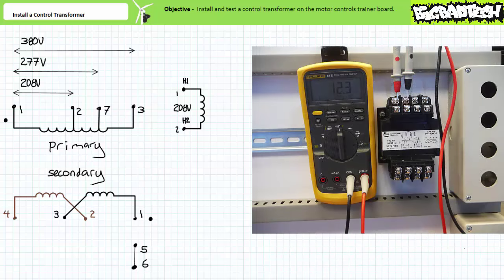An ohmmeter used to check the resistance of the primary windings from 1 to 2 shows continuity and a resistance of 12-ish ohms.